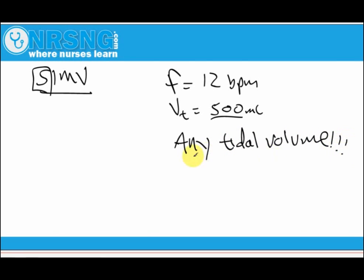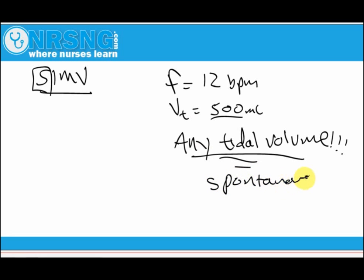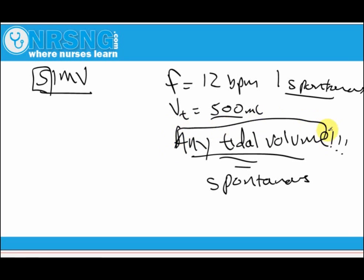That's the key difference between SIMV and assist control. For example, if the ventilator is delivering 12 breaths per minute but the patient wants to take a 13th breath spontaneously, they can take any tidal volume they want — say 50 mL. That won't deliver the full volume they need, but it's what the patient drew on their own. On the next mandatory breath the ventilator delivers its 500 mL.